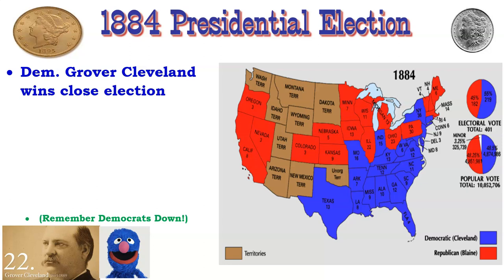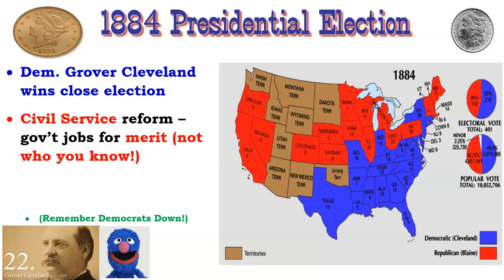In the 1884 presidential election, Democrat Grover Cleveland wins a very close election. He was all about civil service reform — wanting more rules for how you got a federal government job, not just based on who you know. He also argued for a lower tariff, which had been accumulating a huge excess of money in the federal treasury beyond its intended purpose of protecting and promoting industrial growth. That excess money was bad for consumers.